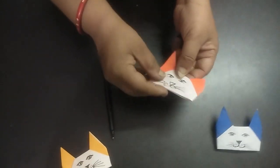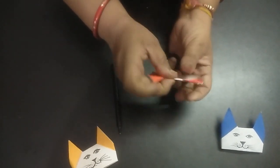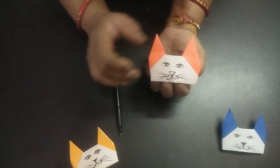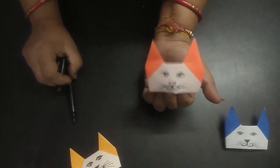And your cat puppet is ready. If you wish, you can stick these all together with the glue and then you can keep it like this. Your finger puppet is ready. Thank you.